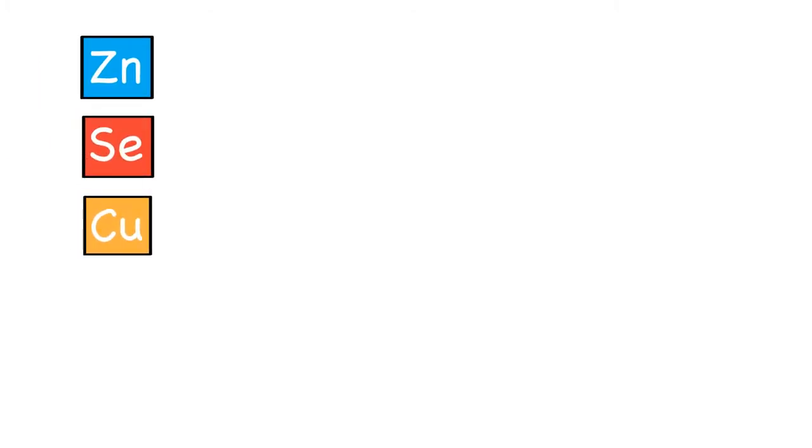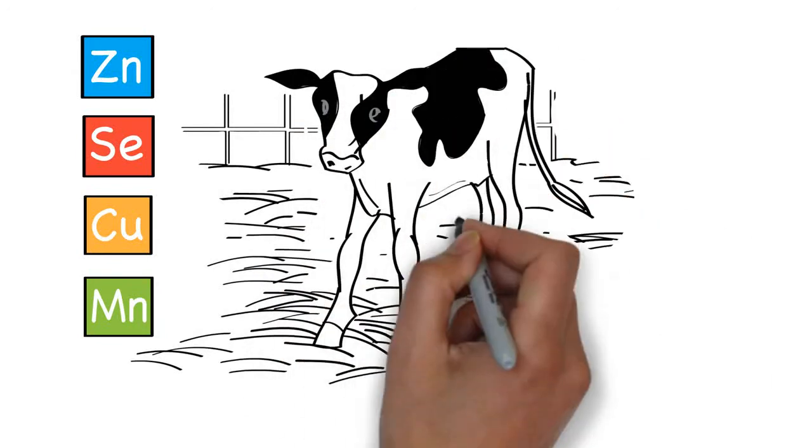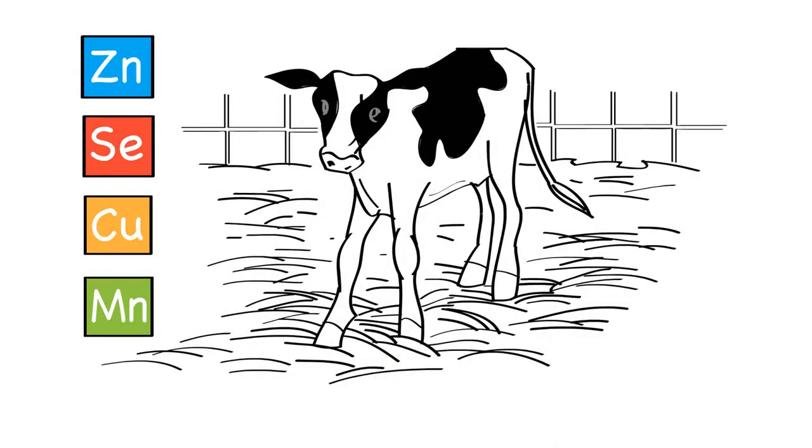The trace minerals zinc, selenium, copper, and manganese are vital in supporting a healthy immune system and optimal growth rates in young calves.